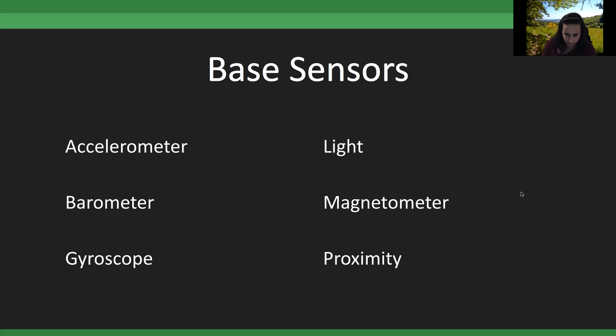We can make the slides available to anyone who wants them, and this is also being recorded so you can watch again. When we talk about mobile devices, we're primarily talking about smartphones — many tablets and some Chromebooks also have these sensors. There are six main sensors we'll look at.